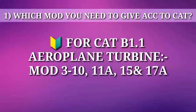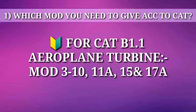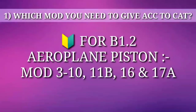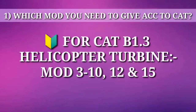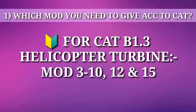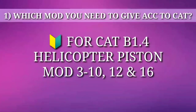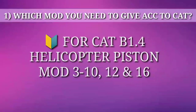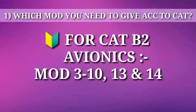For category B1.1 which is Aeroplane Turbine, we have module 3 to 10, 11A, 15 and 17A. For category B1.2 Aeroplane Piston, we need module 3 to 10, 11B, 16 and 17A. For category B1.3 which is Helicopter Turbine, we have module 3 to 10, module 12 and module 15. For category B1.4 Helicopter Piston, we have module 3 to 10, module 12 and module 16. For category B2 which is Avionics, we have modules 3 to 10, 13 and 14.